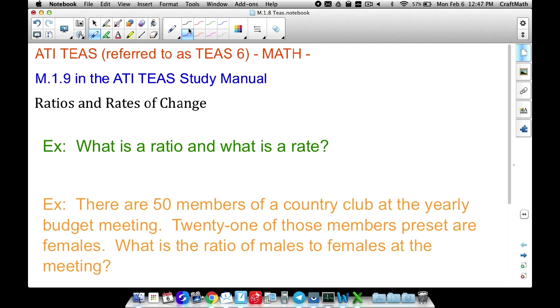Alright, in this video we are going to look at goal M.1.9 in the ATI TEAS study manual and this involves ratios and rates of change.